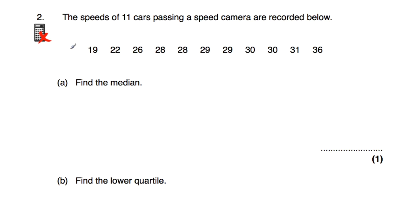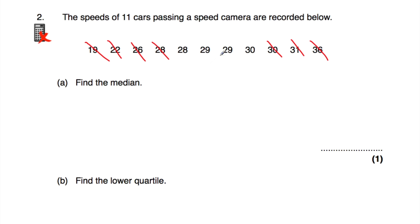Question number two: the speed of 11 cars passing a speed camera are recorded below. We've got their speeds in miles per hour, from 19 miles per hour up to 36 miles per hour, in order from slowest to fastest. We want to find the median — the middle value. So we cross off the smallest, the biggest, and continue inward, and that gives us the median: 29 miles per hour.